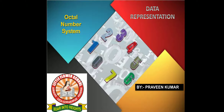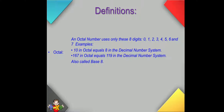Good morning dear students. In the data representation topic, we have previously discussed the decimal number system and binary number system. Now in this lecture we will discuss the octal number system. An octal number uses only these eight digits, 0 to 7. For example, 10 in octal equals 8 in decimal, and 167 in octal equals 119 in decimal. Today we will discuss how to convert the octal number system into different number systems — decimal, binary, and hexadecimal.